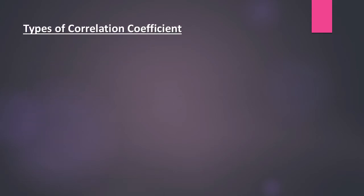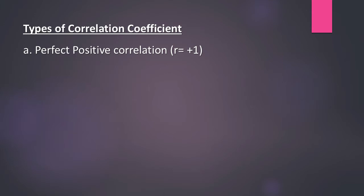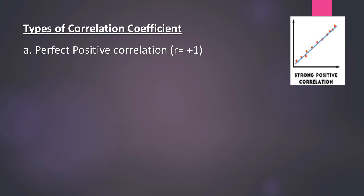Let's see the types of correlation. The first type is perfect positive correlation, where r equals plus one. Here x is directly proportionate to y — both variables rise and fall in the same proportion. In the given picture, the straight line proceeds proportionately upward.